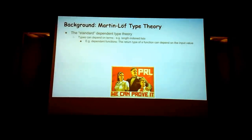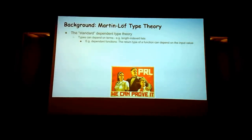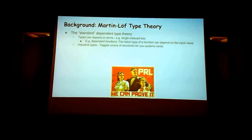For example, if you have a function on booleans, then if it's true you might return an integer; if it's false, you might return a string. Inductive types are basically tagged unions of structures as in C, but more theoretically sound.